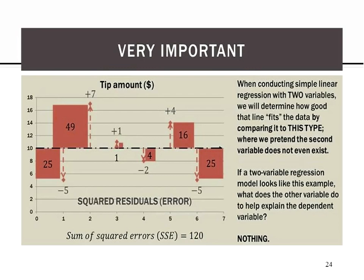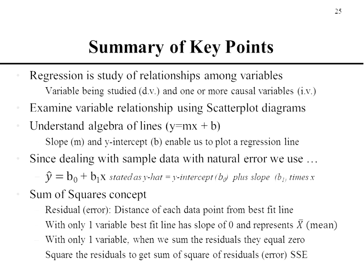Another very important point: when we have this SSE value of 120, we know that value was developed using only the dependent variable. By adding other variables into the equation, we can reduce the error. We might add an independent variable that reduces the error a little bit, or try a different independent variable that reduces it even more. So we're going to get into the very important concept of improving the goodness of the straight line in our data models — everything we try to do from now on will be to take that SSE of 120 and reduce it.